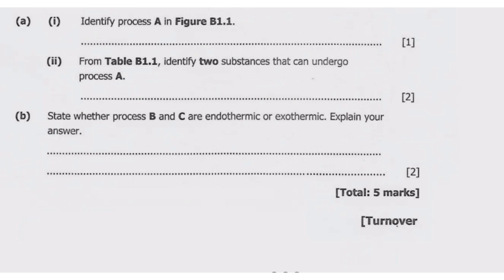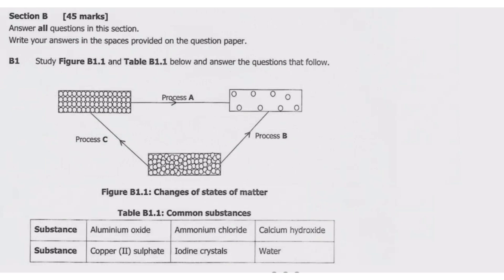The questions are: number 1, identify process A in figure B1.1; number 2, from table B1.1, identify two substances that can undergo process A; and part B, state whether process B and C are endothermic or exothermic and explain your answer.